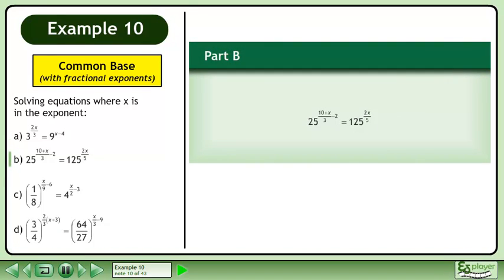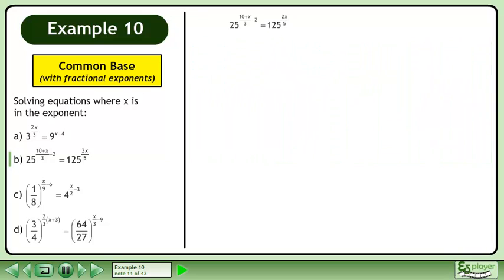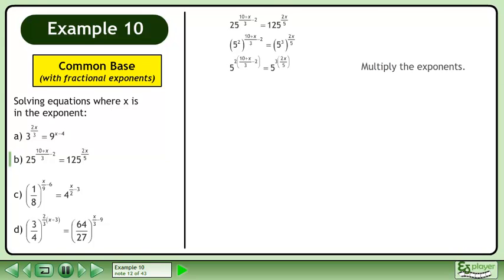In part b, solve 25 raised to the power of 10 plus x over 3 minus 2 equals 125 raised to the power of 2x over 5. Write each base as a power. Multiply the exponents.